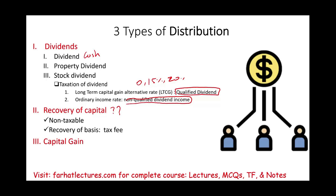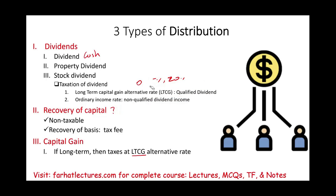If it's not a dividend and not recovery of capital, then it's capital gain — usually long-term capital gain. It's also taxed at the long-term capital gain alternative rate, which is the same as the qualified dividend rate of 0%, 15%, or 20%. We're going to determine when each category applies as we go through each type.